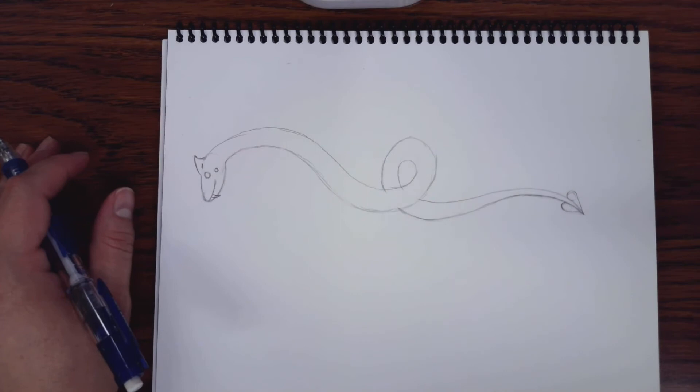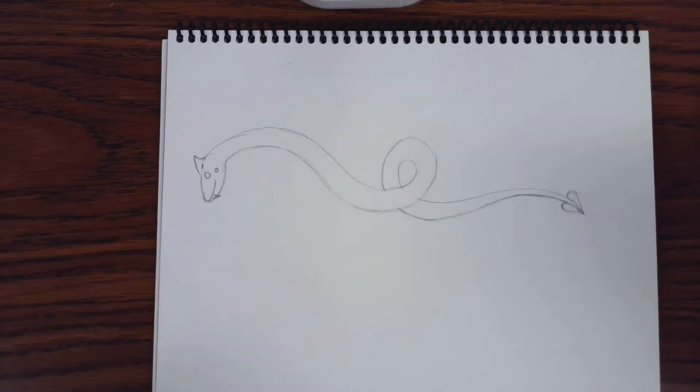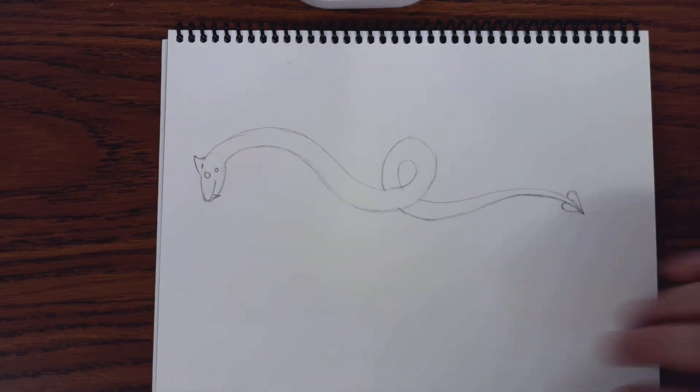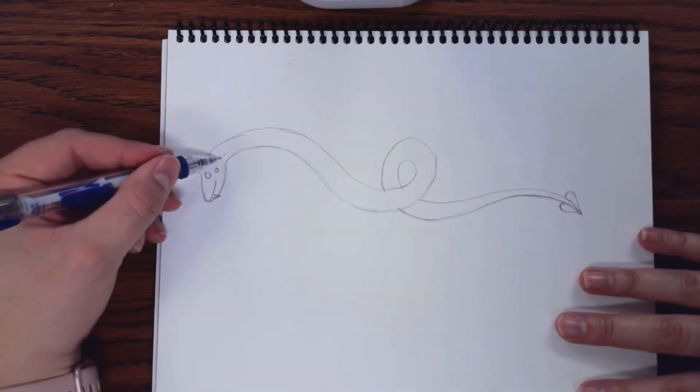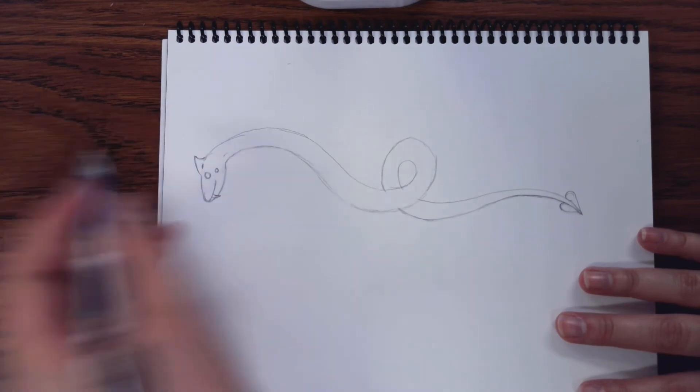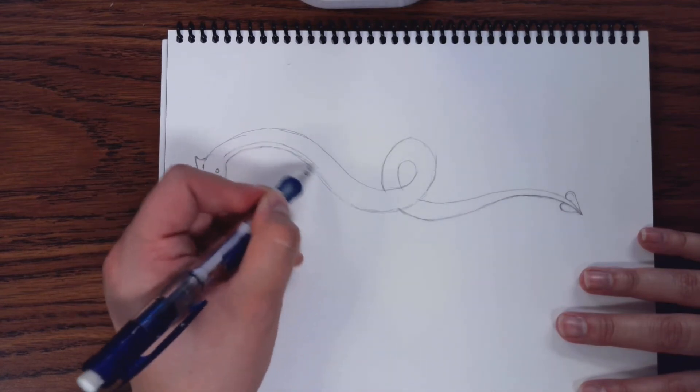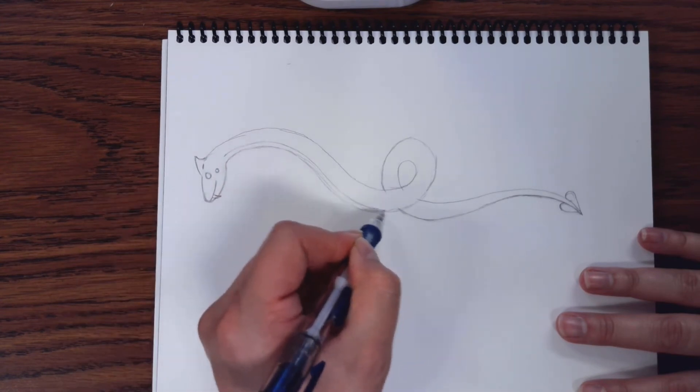You can add nostrils now if you want to, but I'm not going to do it until the next section. The next part is we're going to draw his scaly belly. We're going to start with a line right next to the bottom of his face. And we're going to take that line and basically trace the line that's underneath it.